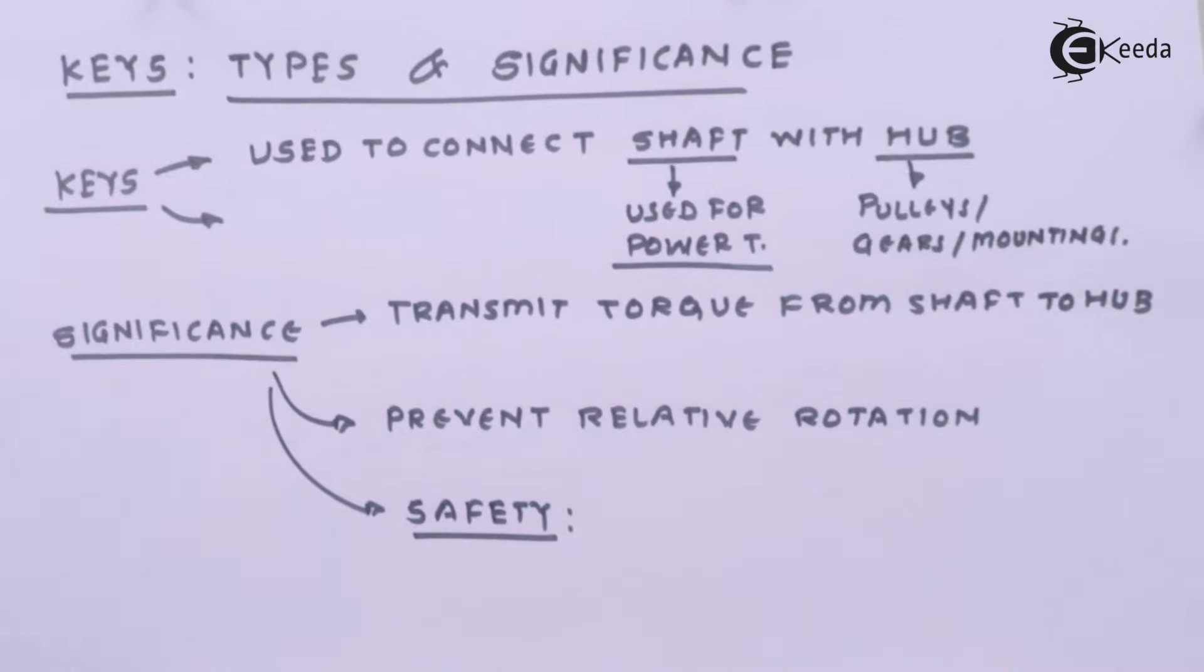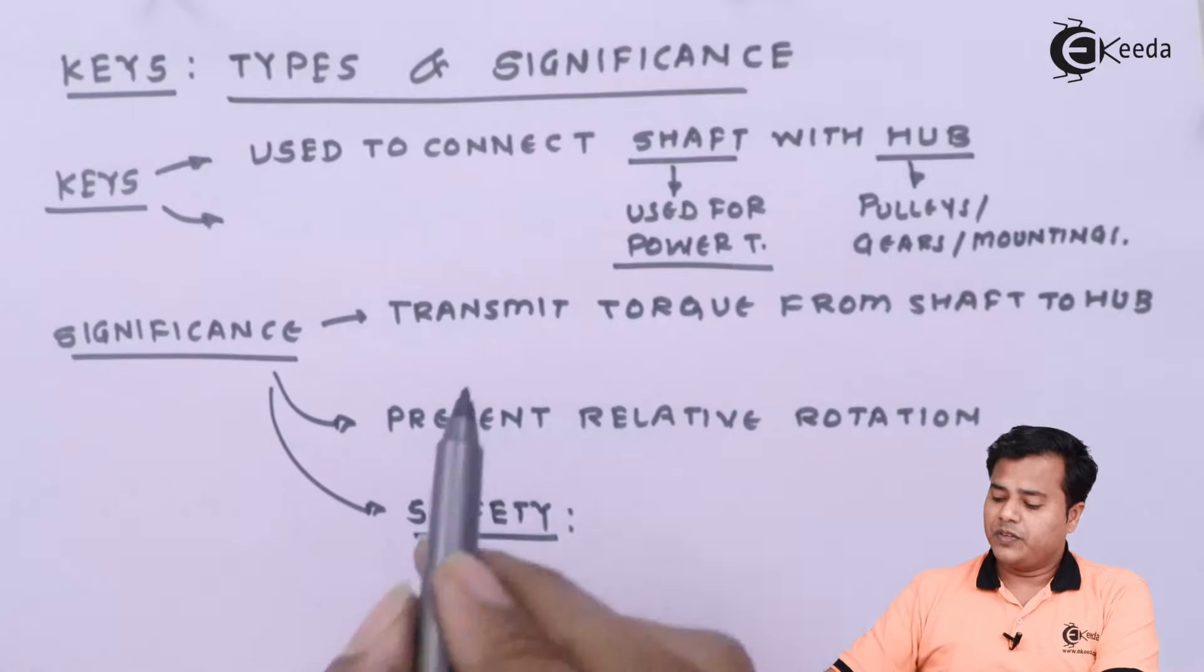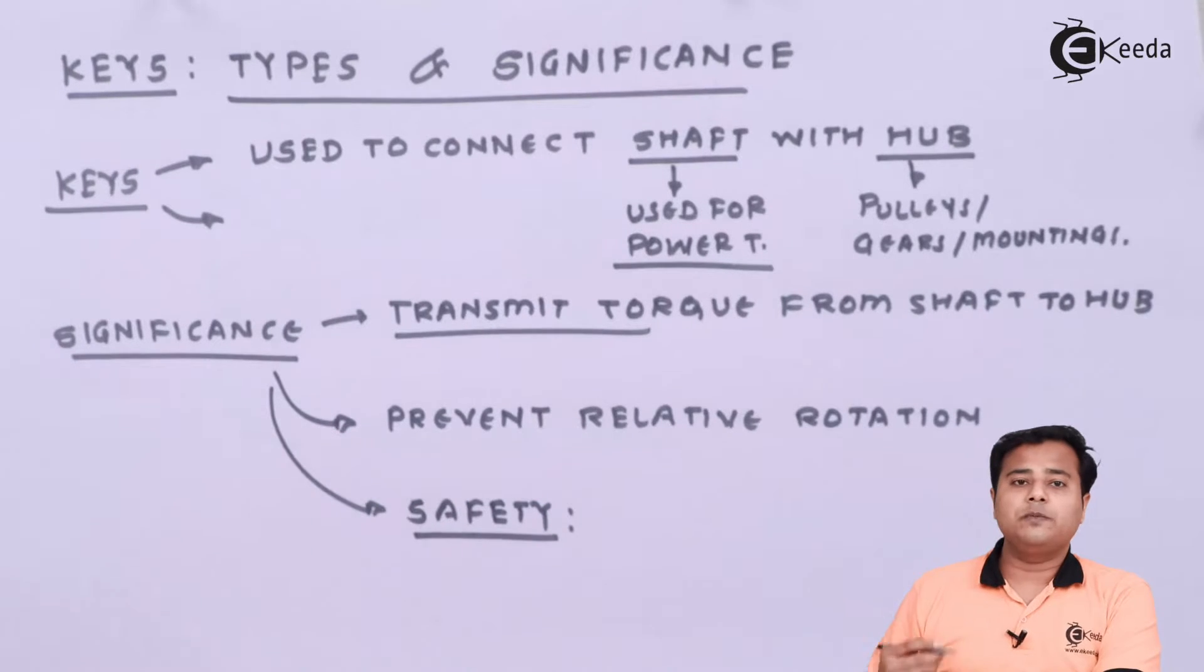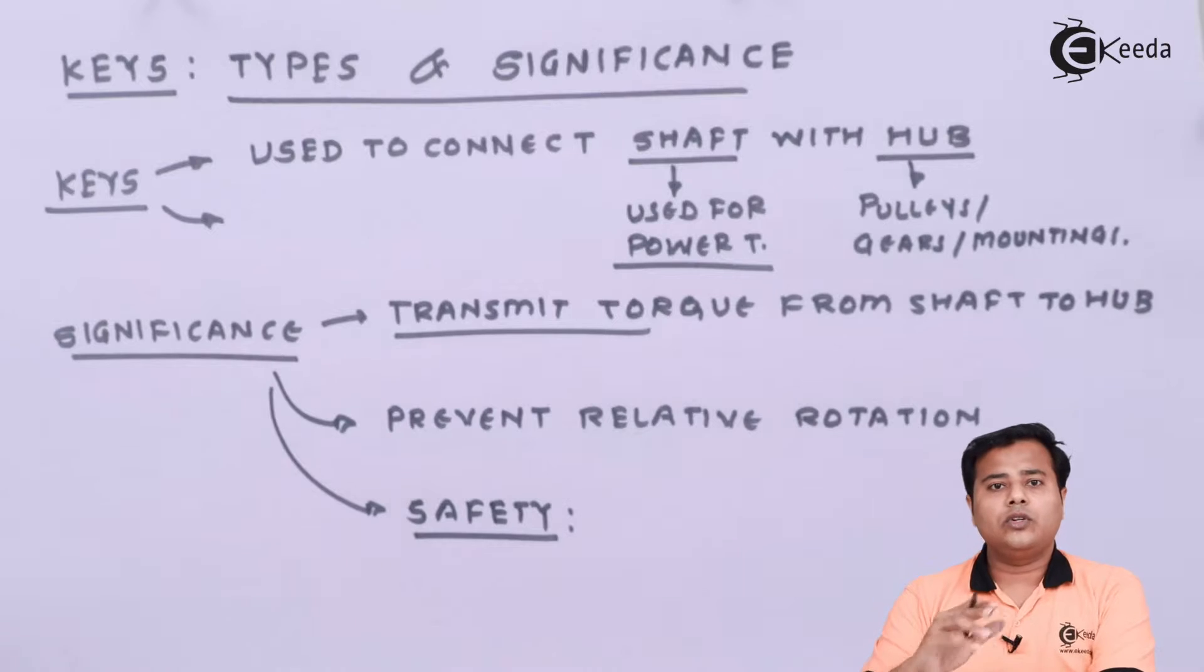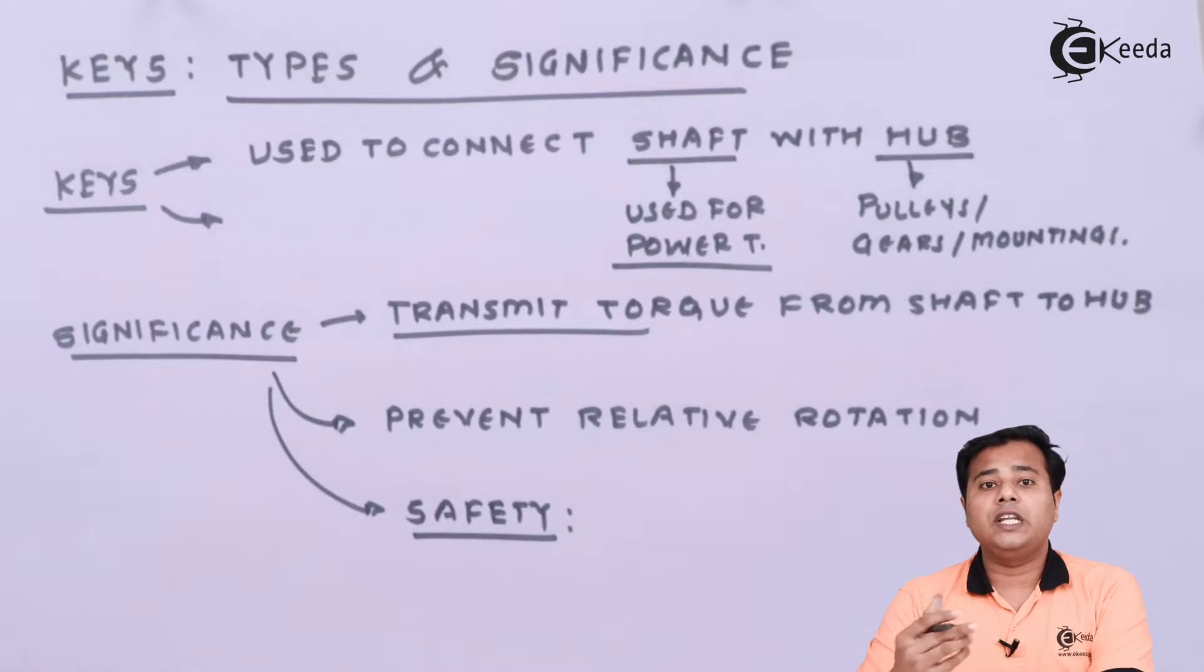So that is the definition of key. When we go to significance there are three main significances. Very first, to transmit torque from the shaft to the hub or to transmit the torque from the shaft to any mounting.